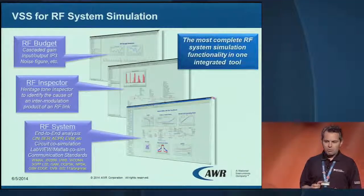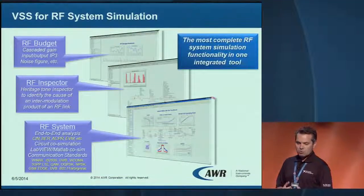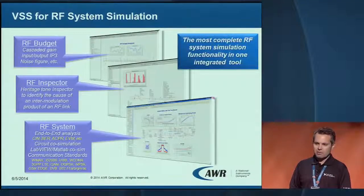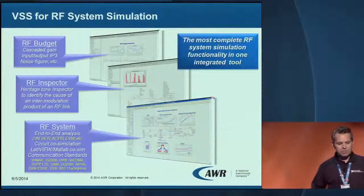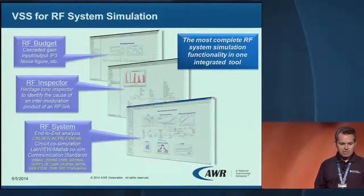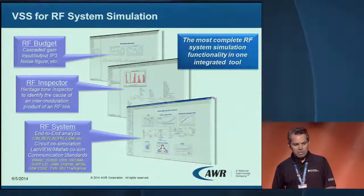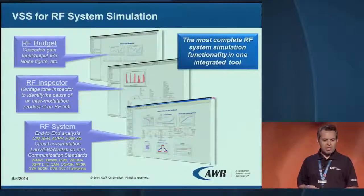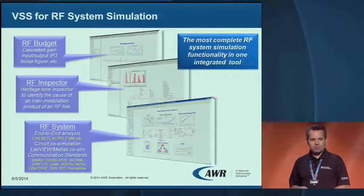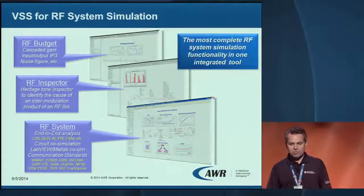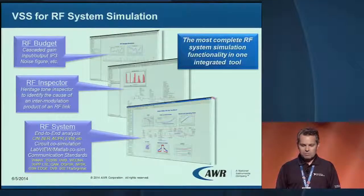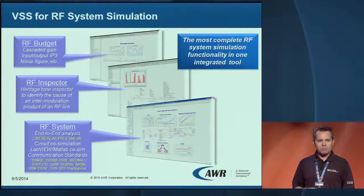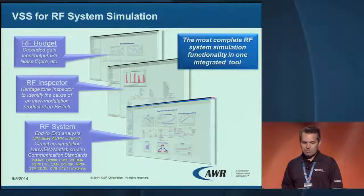The three main tools in VSS that make this possible are: the RF budgeting capabilities, which allow us to perform a wide range of cascaded measurements like gain, input/output IP3, IP2, and noise figure; and the RF Inspector, our spur analysis tool, which helps you identify the heritage of any tones in your results so you can tweak your design to ensure unwanted spurs do not occur where they should not.